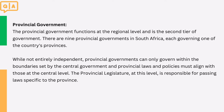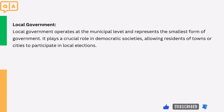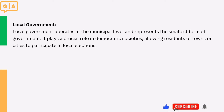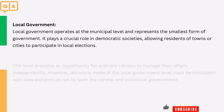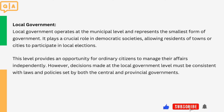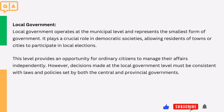3. Local government. Local government operates at the municipal level and represents the smallest form of government. It plays a crucial role in democratic societies, allowing residents of towns or cities to participate in local elections. This level provides an opportunity for ordinary citizens to manage their affairs independently. However, decisions made at the local government level must be consistent with laws and policies set by both the central and provincial governments.